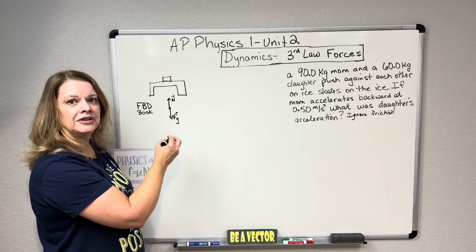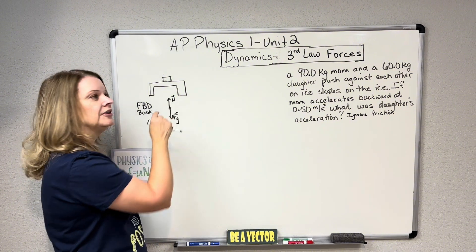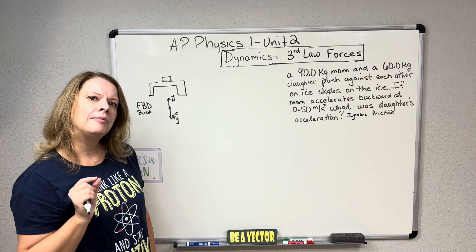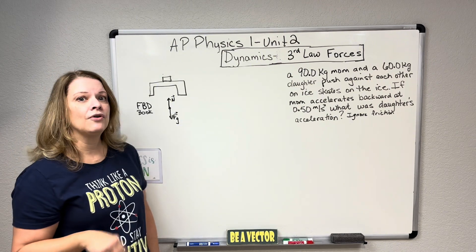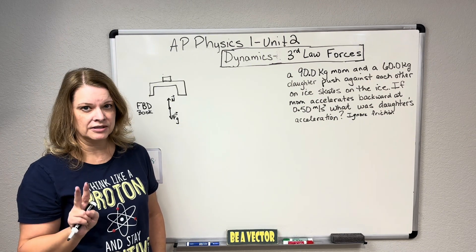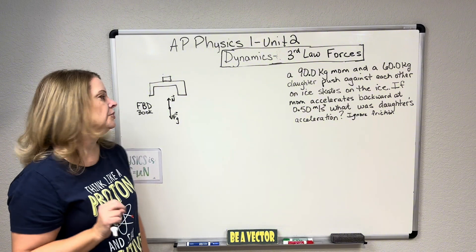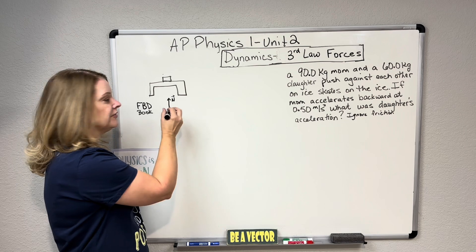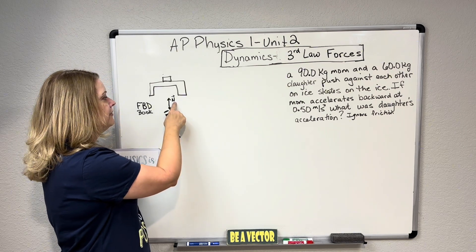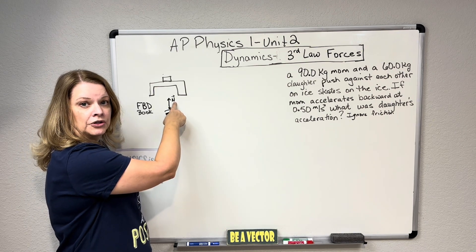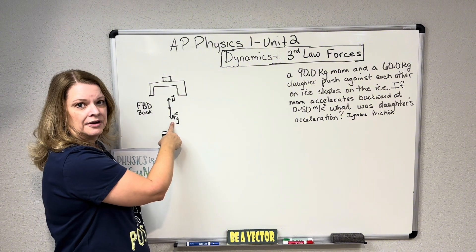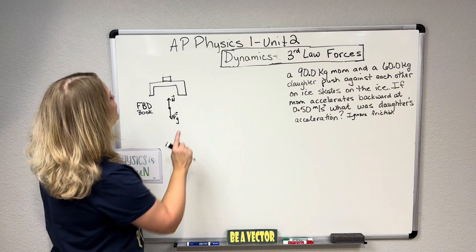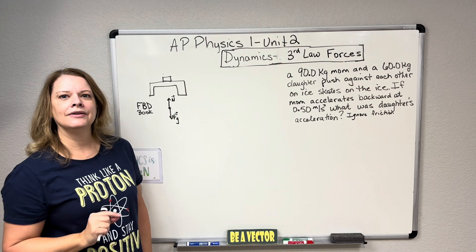Students tend to think these are third law pairs because they are opposite and equal to each other. But that is not the case. Third law pairs need to involve only two objects. In this case, you would have the book — that's the dot — the table, because that's what's causing the normal force, and the Earth pulling down, which is causing the force due to gravity. That is three objects, so that is not a third law pair.